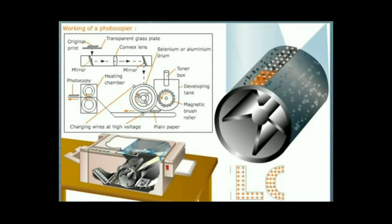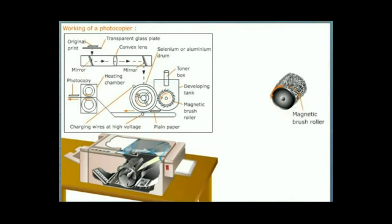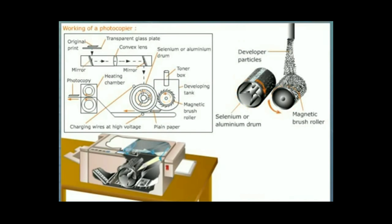The magnetic brush roller present near the aluminum drum moves in a direction opposite to that of the aluminum drum. The magnetic brush roller picks up the developer particles. When the brush roller comes in contact with the aluminum drum, the negatively charged toner particles are transferred to the latent image which is positive in charge. Hence, latent image becomes visible.